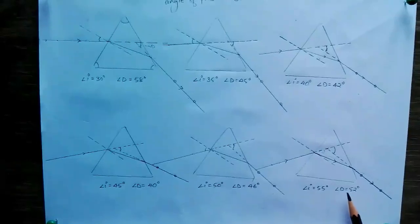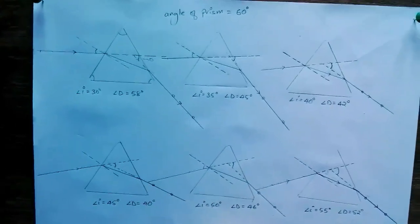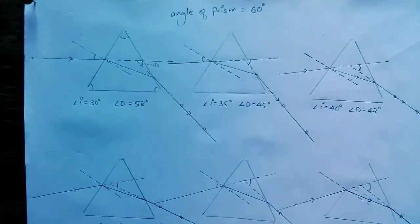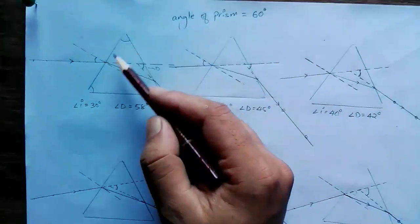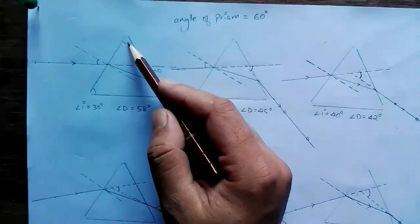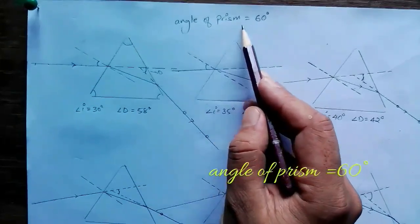As you can see, the angle of deviation first decreases, reaches a minimum angle of 40 degrees that we found, and then the angle of deviation starts increasing again. That's why we measure this angle. The angle of the prism is 60 degrees, which we obtained.